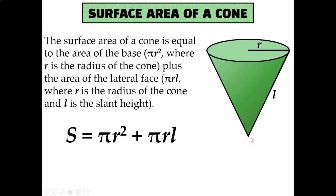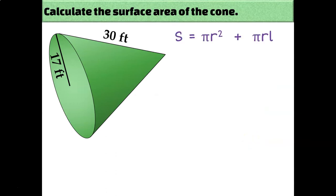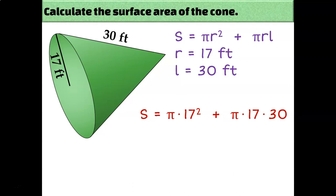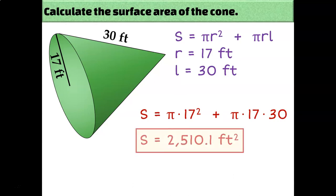Let's take a look at a couple of examples. Since this is a cone, I'll be using the pi r squared plus pi r l formula. The first thing I need is r, which is labeled on my diagram as 17. Then I need r again, which is still 17, and then I need l, the slant height, which is shown on my diagram as 30 feet. I can tell this is the slant height because it's labeled as the slanted portion going from the base along the outer edge of the cone to the apex. So I can just plug those numbers into my formula, plug into the calculator, and get an answer of 2510.1 square feet.